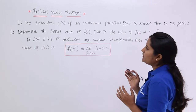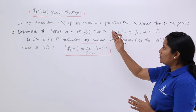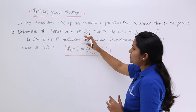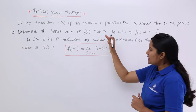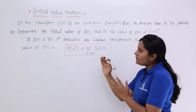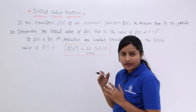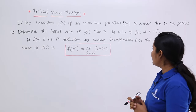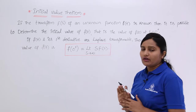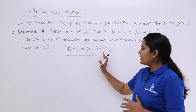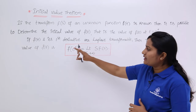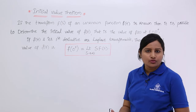You can see the definition: if the transform F(s) of an unknown function f(t) is known, then it is possible to determine the initial value of f(t), that is the value of f(t) at t equal to 0 plus. If f(t) and its first derivative are Laplace transformable, then the initial value f(0+) is equal to the limit as s tends to infinity of s·F(s). If you know F(s), you can trace the initial value of the unknown function.